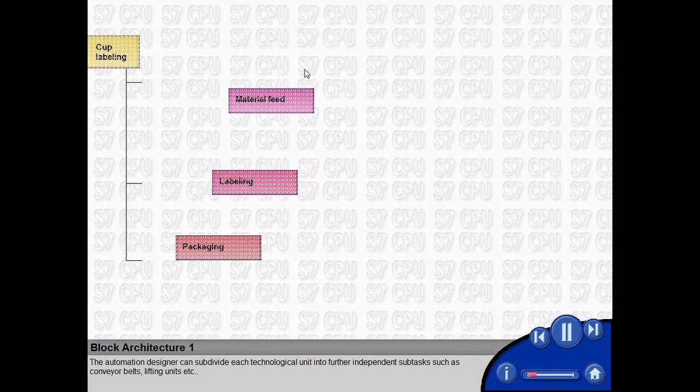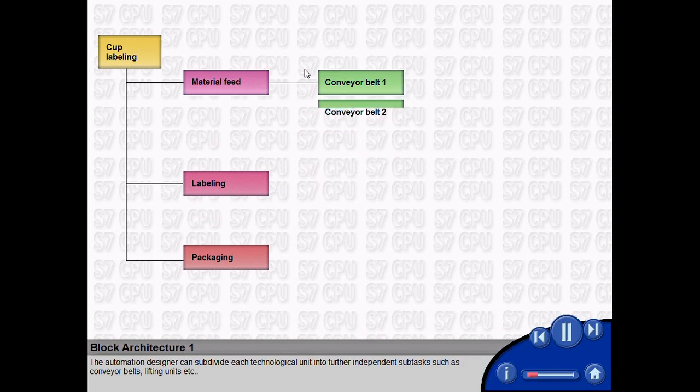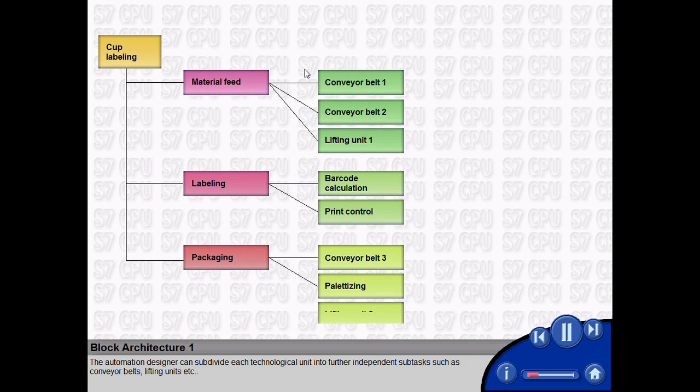The automation designer can subdivide each technological unit into further independent subtasks, such as conveyor belts, lifting units, etc.